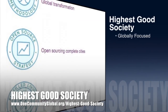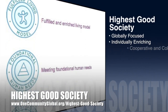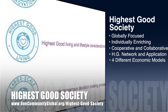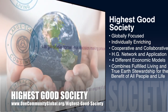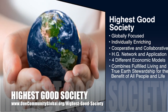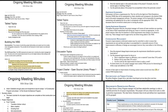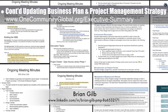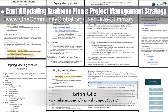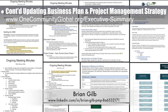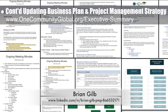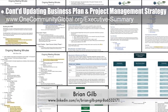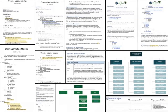One Community's approach to highest good society is globally focused, individually enriching, cooperative and collaborative, includes a highest good network and application, four different economic models, and combines fulfilled living and true earth stewardship for the benefit of all people and all life on this planet. This week the core team, working with Brian Gilb, project management professional, continued their fourth week updating the business plan and project management strategy — rewriting the behind-the-scenes content for the open source library program charter and beginning task and work package outlining for the complete food component.